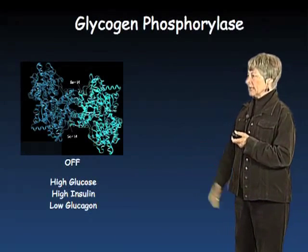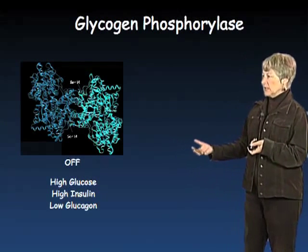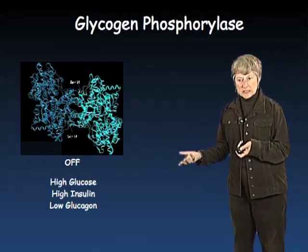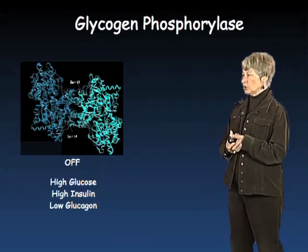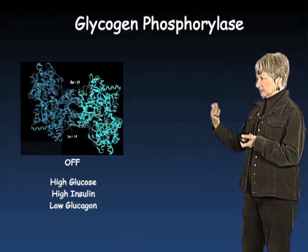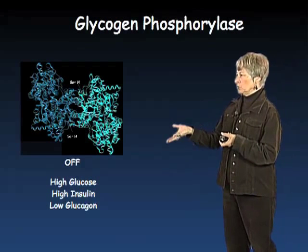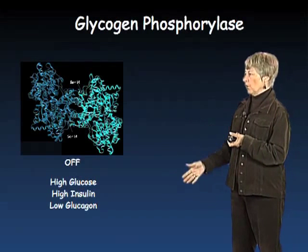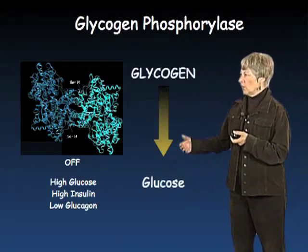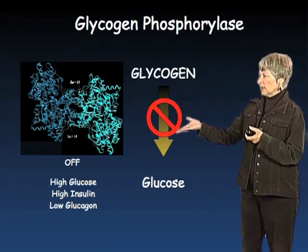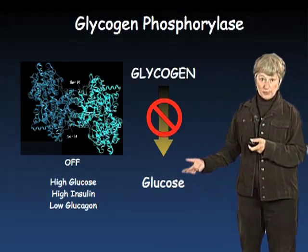Here's glycogen phosphorylase. When you've just had a carbohydrate-rich meal, glucose is high, insulin is high, glucagon is low. Insulin and glucagon are our two metabolic hormones that tell the body whether we are in an energy-rich stage with glucose, or in more of a fasting state. So glycogen phosphorylase is turned off — if you have lots of glucose, you want to be making glycogen, not breaking it down.